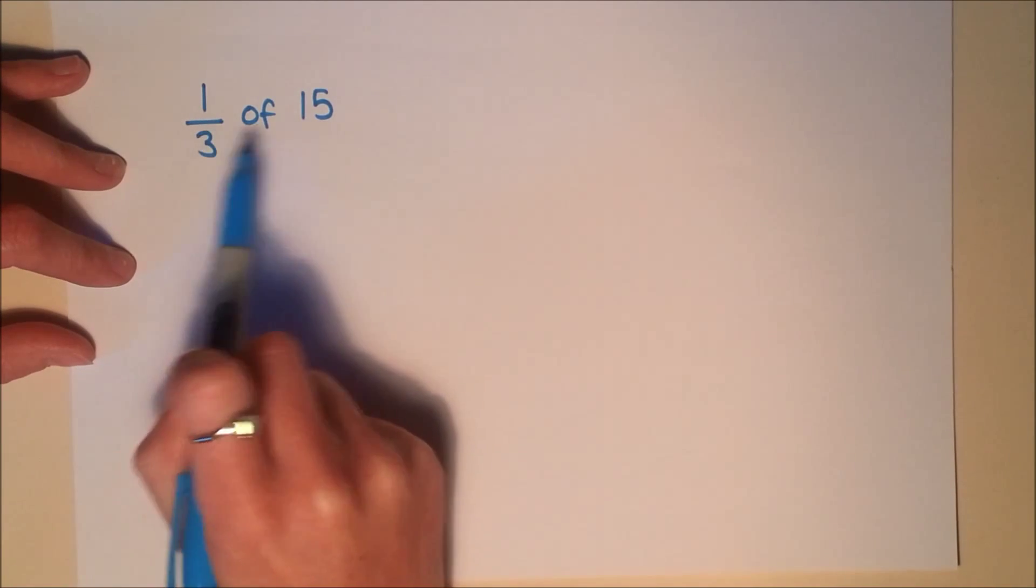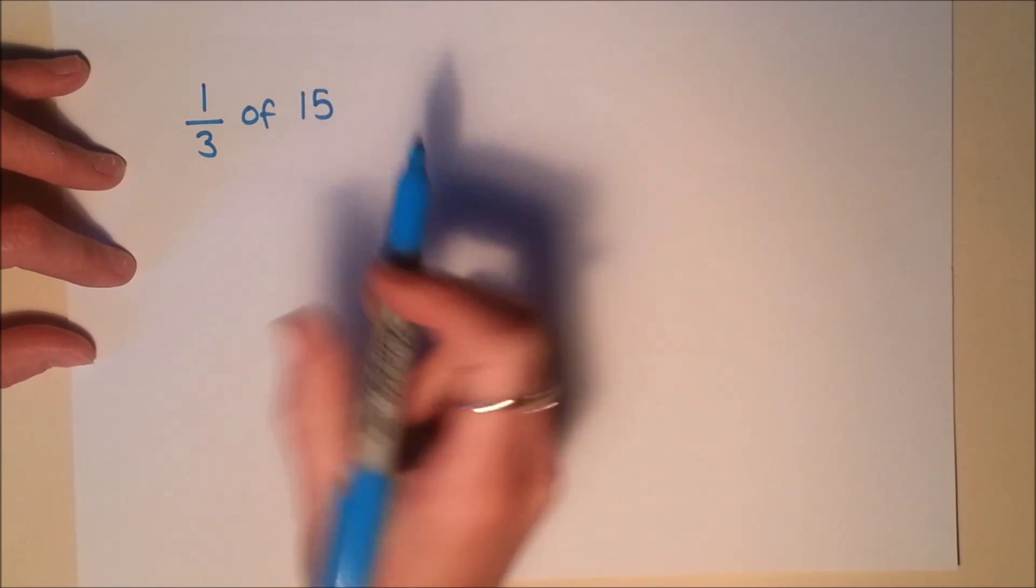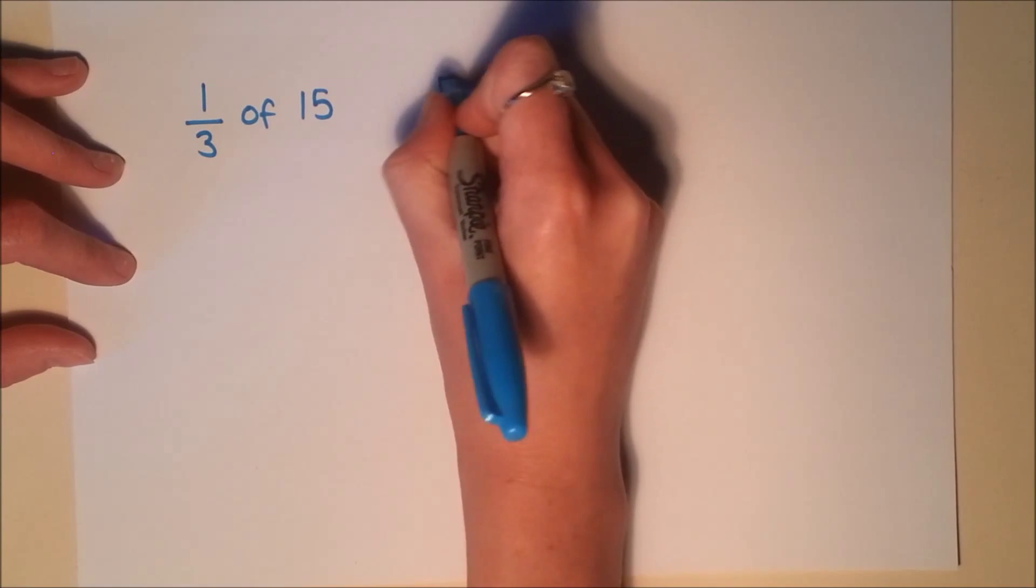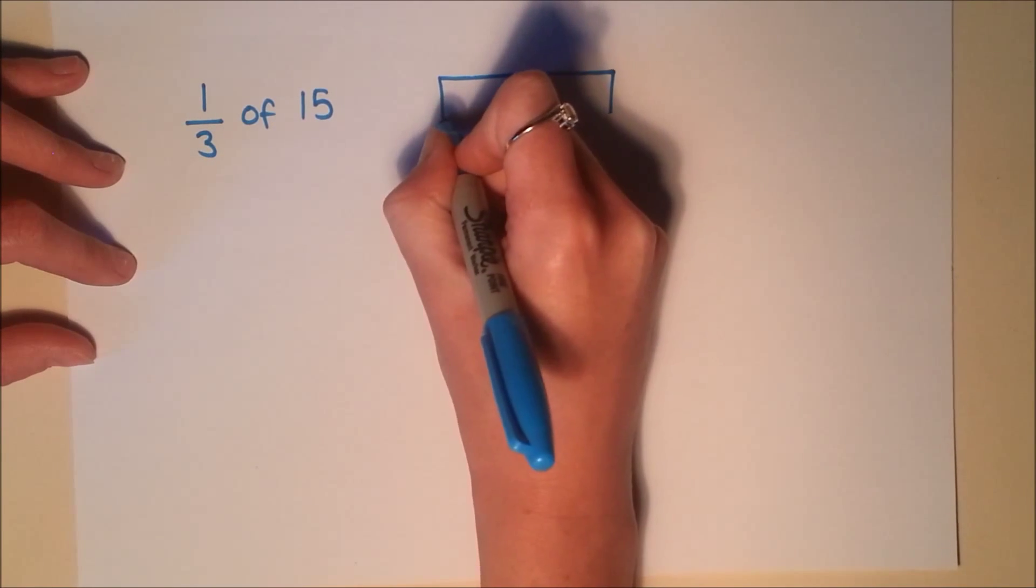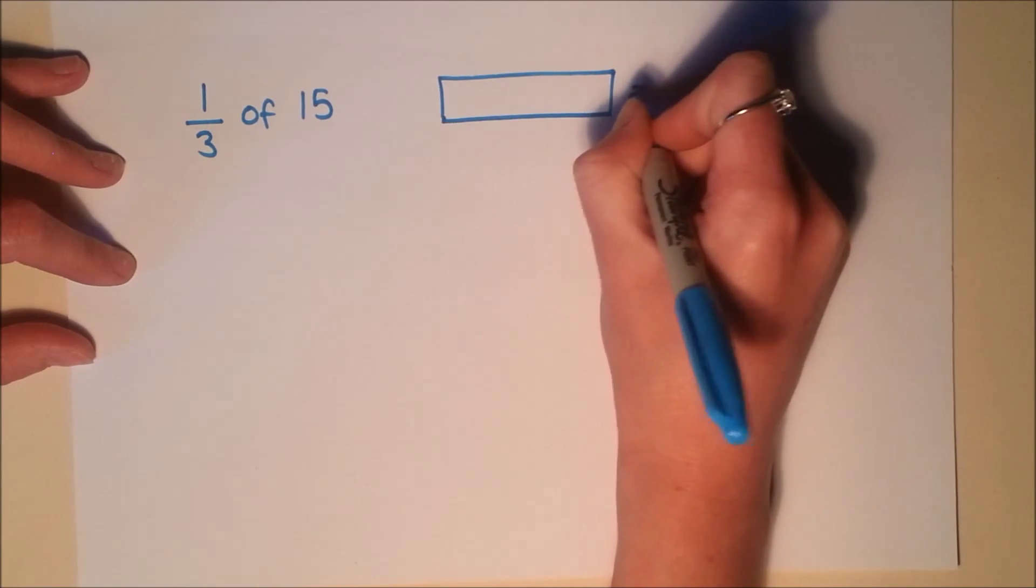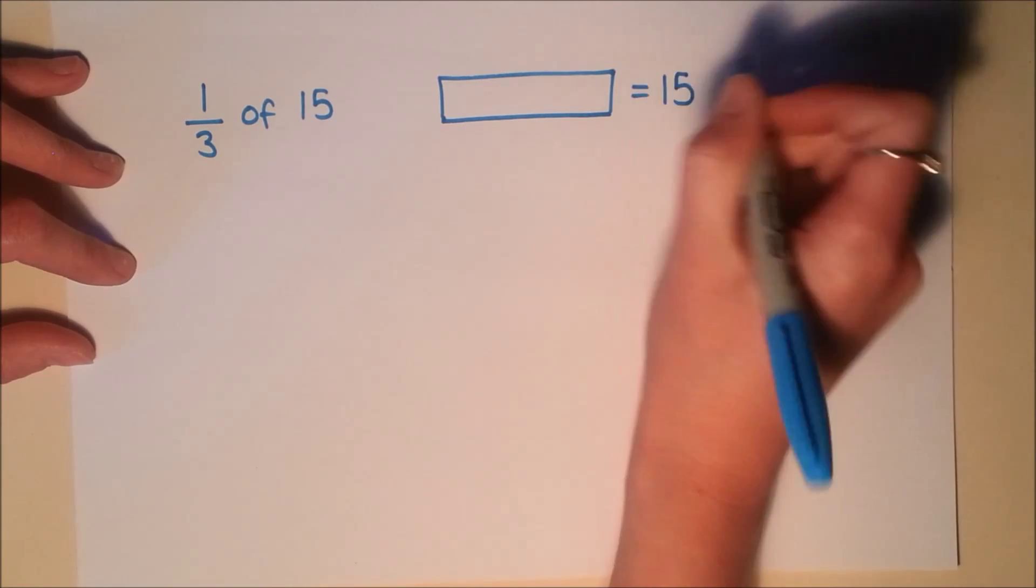We need to think about what this means. This means that 15 is our whole amount. So I'm just going to draw a little square, a little rectangle, to represent a whole amount that's worth 15.